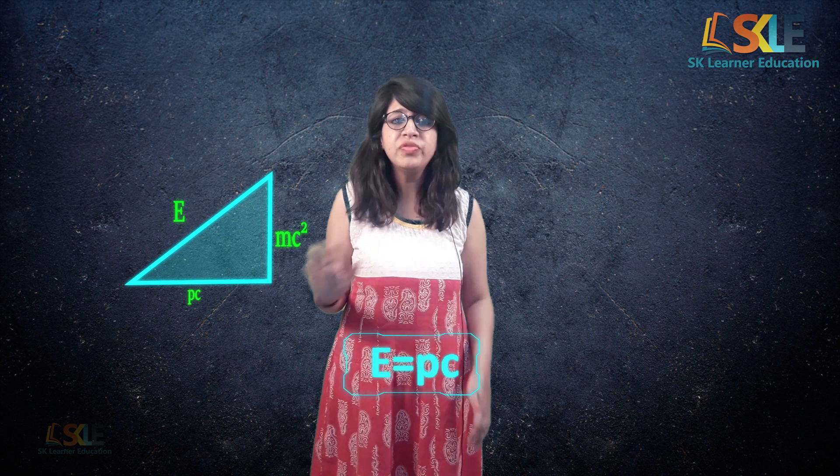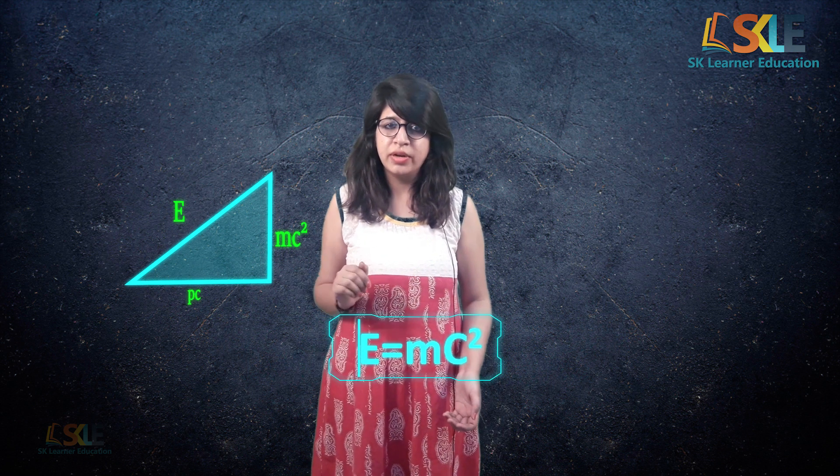This equation tells us about the mass of a particle. If the mass is zero — for example, a photon is massless — then its energy is equal to pc. Similarly, if a particle has zero momentum and is not moving, then we get back E equals mc squared. All these equations are very important, especially for learning relativity.